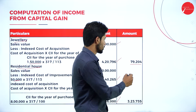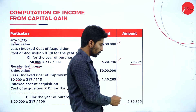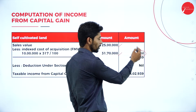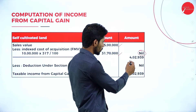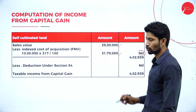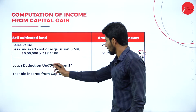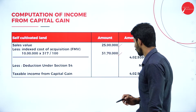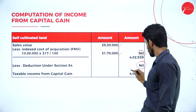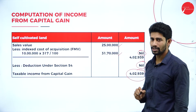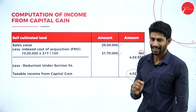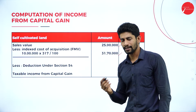Totalling the outer column: Asset 1 gives rupees 79,204; Asset 2 gives rupees 3,23,735; Asset 3 is nil. Total capital gain = rupees 4,02,939. Less deduction under Section 54: nil, as no deduction is claimed. Therefore, taxable income from capital gain is rupees 4,02,939.